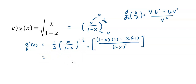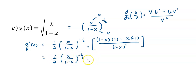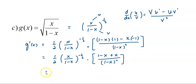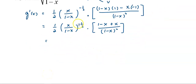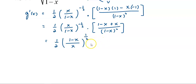Now we simplify. We have 1/2 times [x/(1-x)] to the power of negative 1/2. Simplifying the bracket: (1-x) multiplied by 1 gives (1-x), and negative multiplied by negative x gives positive x, so the numerator is 1-x+x, which equals 1. The expression inside becomes 1 over (1-x) squared. Since the power is negative 1/2, we find the reciprocal, giving power of 1/2, and 1-x+x simplifies to 1 over (1-x) squared.